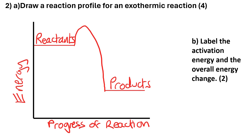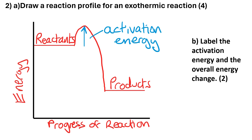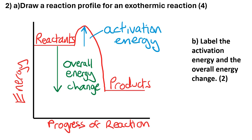Question B: label the activation energy and the overall energy change. The activation energy is from the level of the reactants up to the top of the curve — make sure the arrow starts and finishes at exactly the right point. The overall energy change is the difference between the energy level of the reactants and the energy level of the products. Make sure you notice the direction of the arrow.